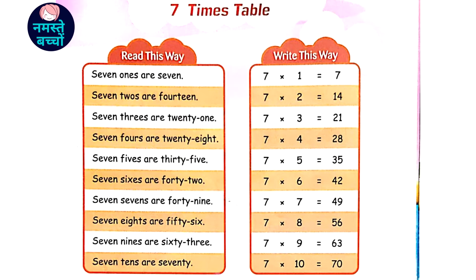7 3's are 21, 7 4's are 28, 7 5's are 35.